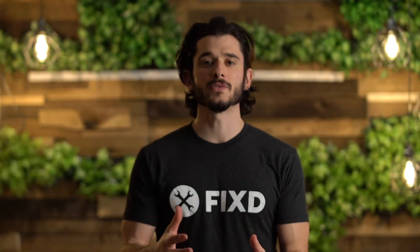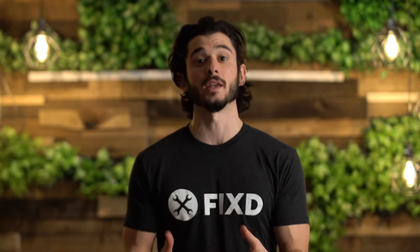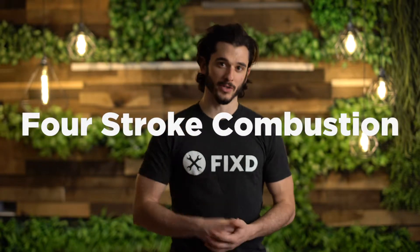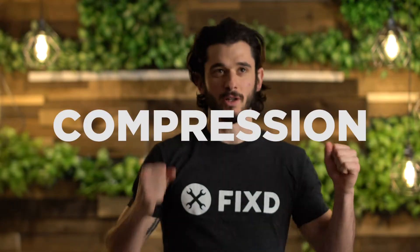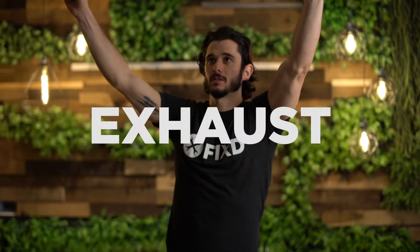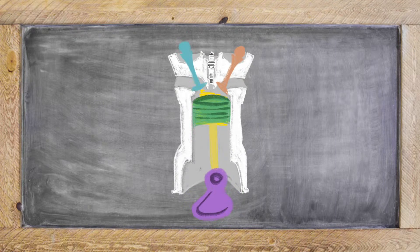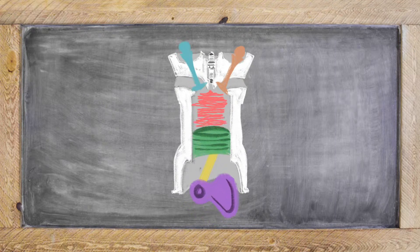Let's explain what a misfire is. At its core, a misfire is the desynchronization of the combustion cycle within your engine. Unless your car is made before 1980, your car has a four stroke combustion cycle: intake, compression, power, and exhaust. Your cylinder intakes the fuel-oxygen mix, the piston compresses that mix, the spark plug ignites the mix to give power, and finally your cylinder is open to release the exhaust.